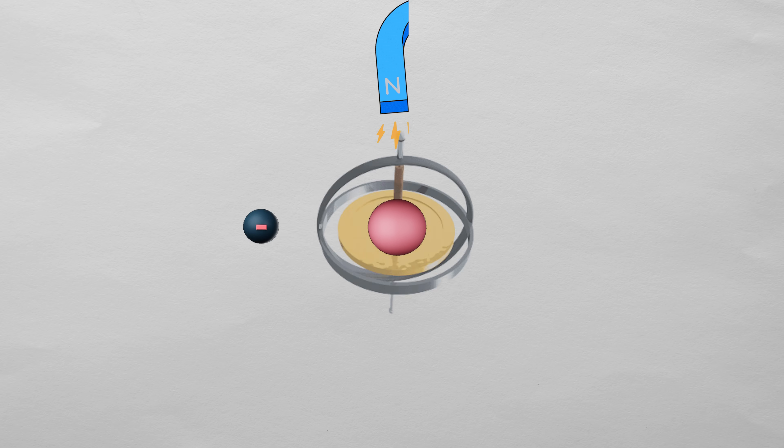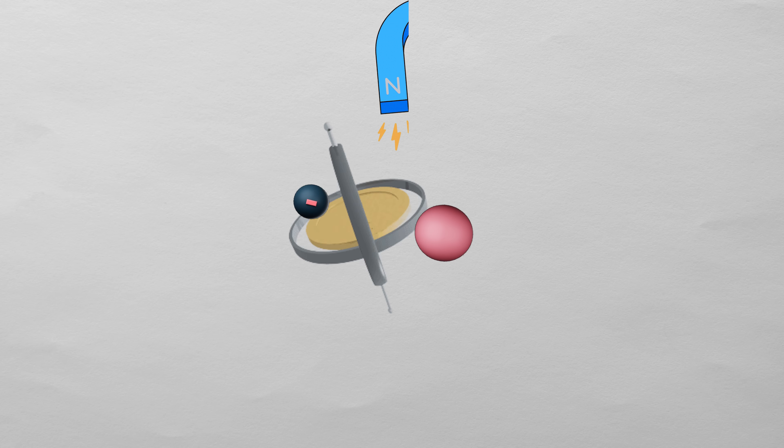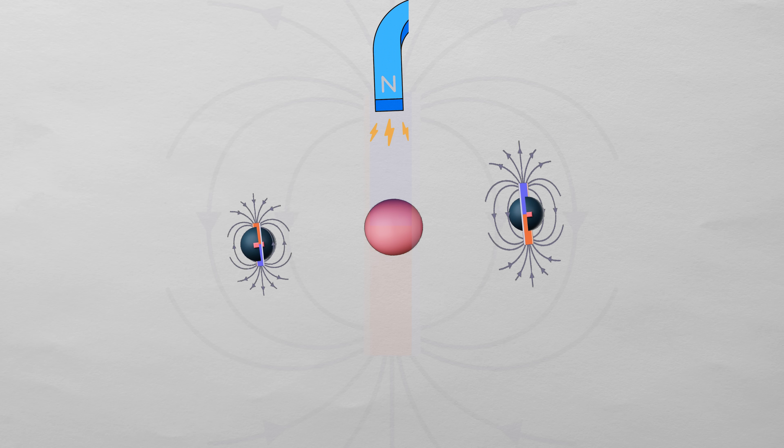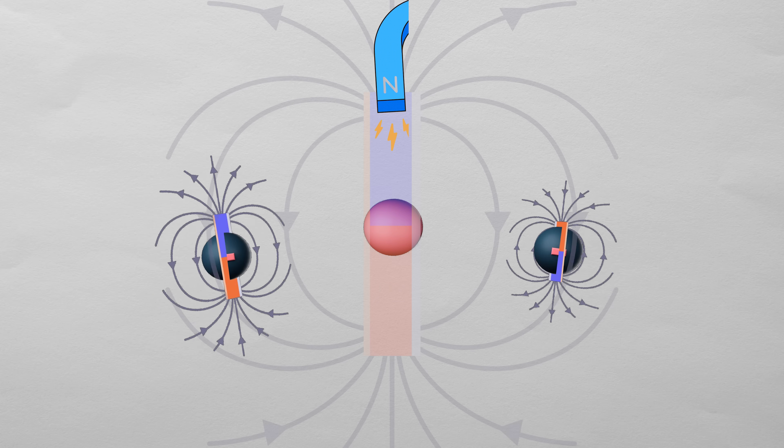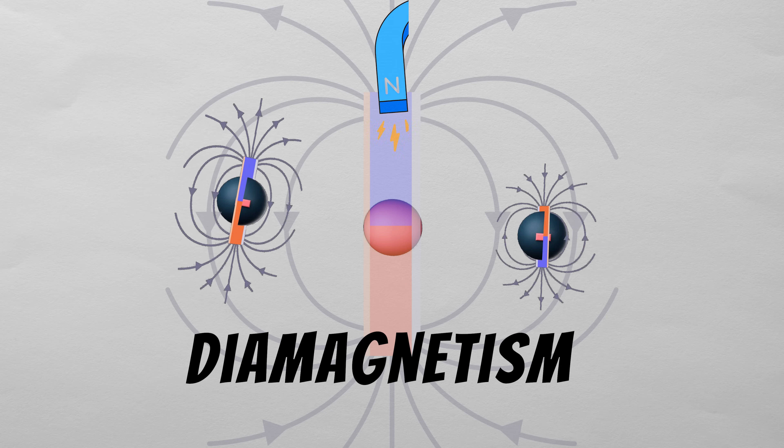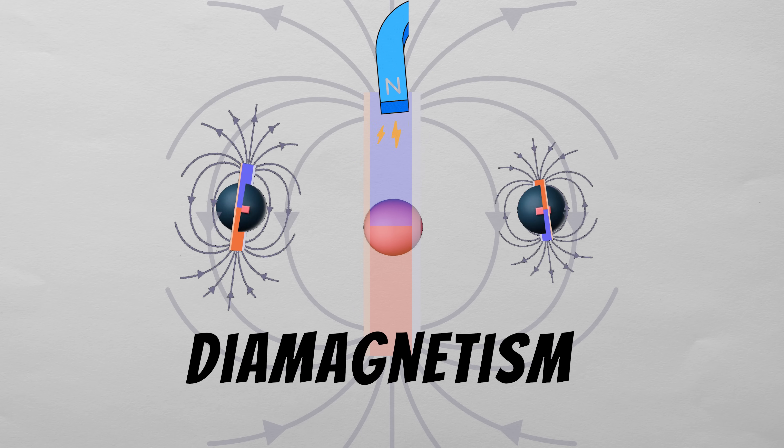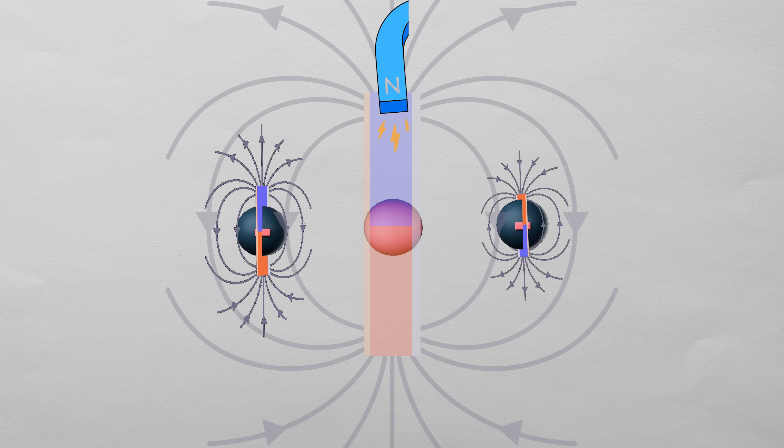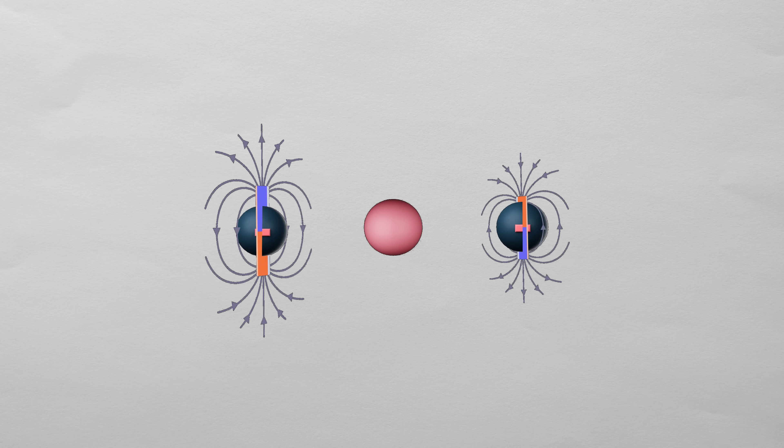This precession causes a new oscillating electric field, which causes a new magnetic field. But this time, the individual electron magnetic fields don't cancel out because they precess in the same direction. This effect is what's called diamagnetism, and it only occurs when the material is placed in a magnetic field. Once you remove the external field, the effect disappears.